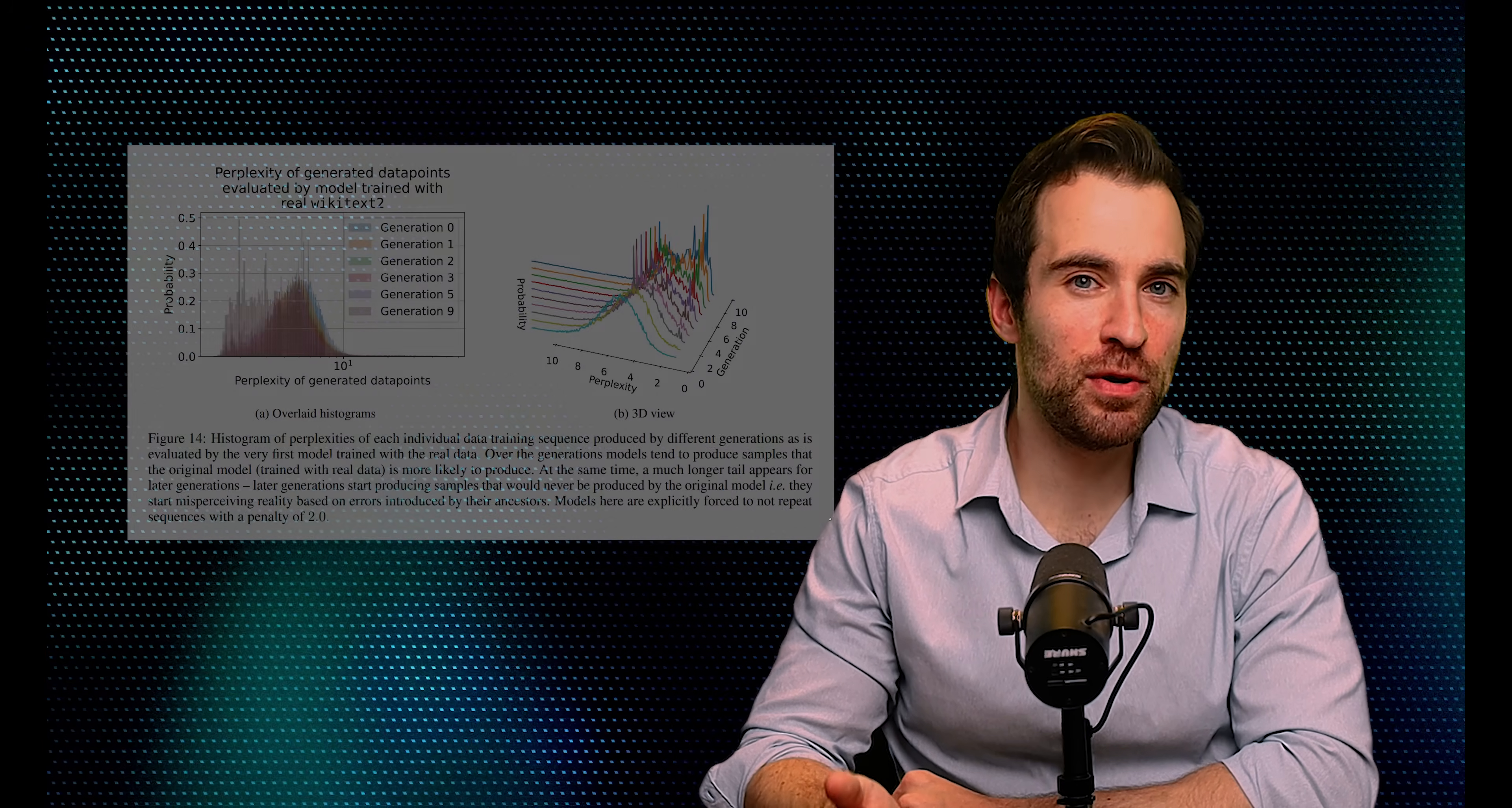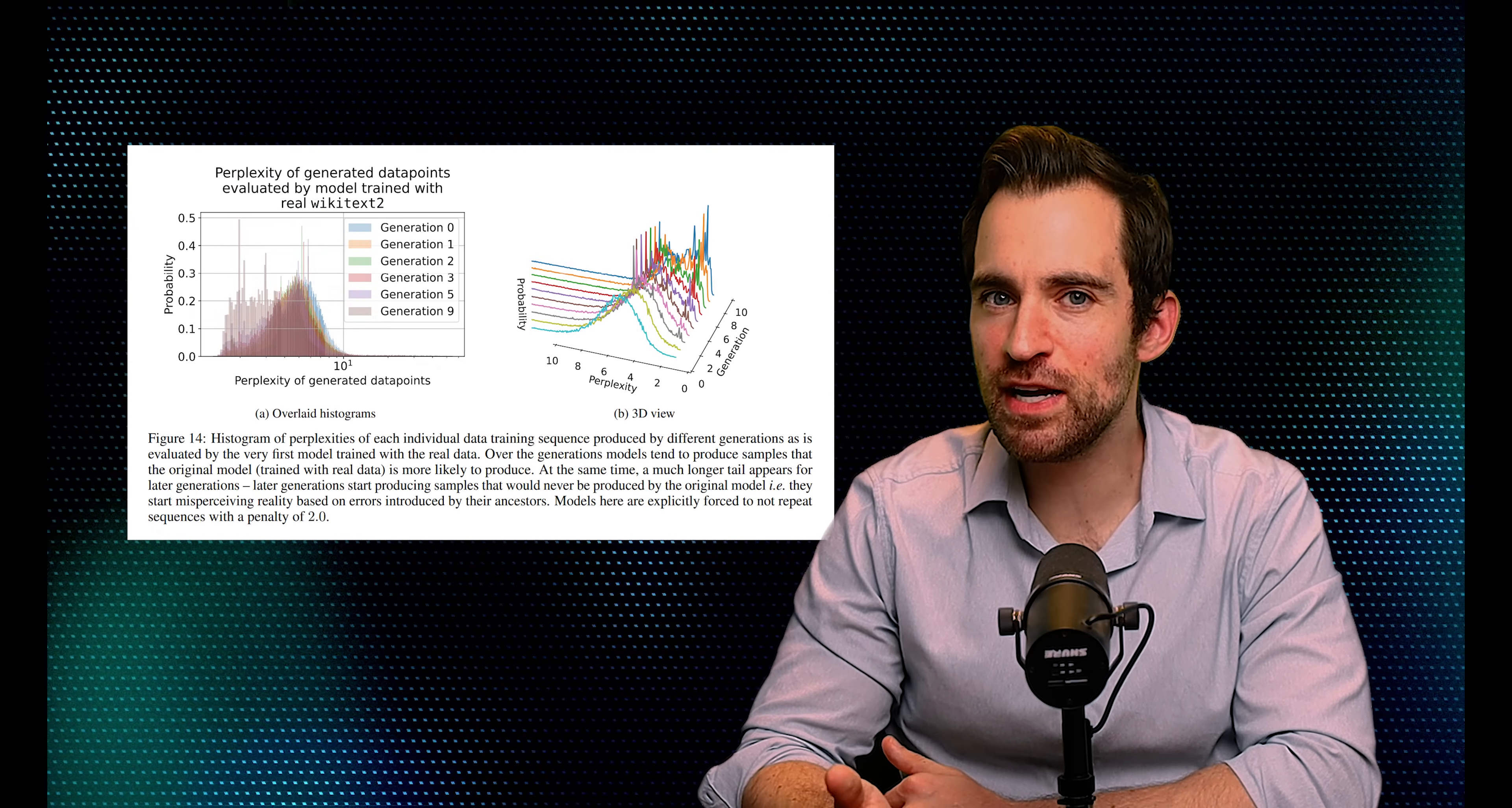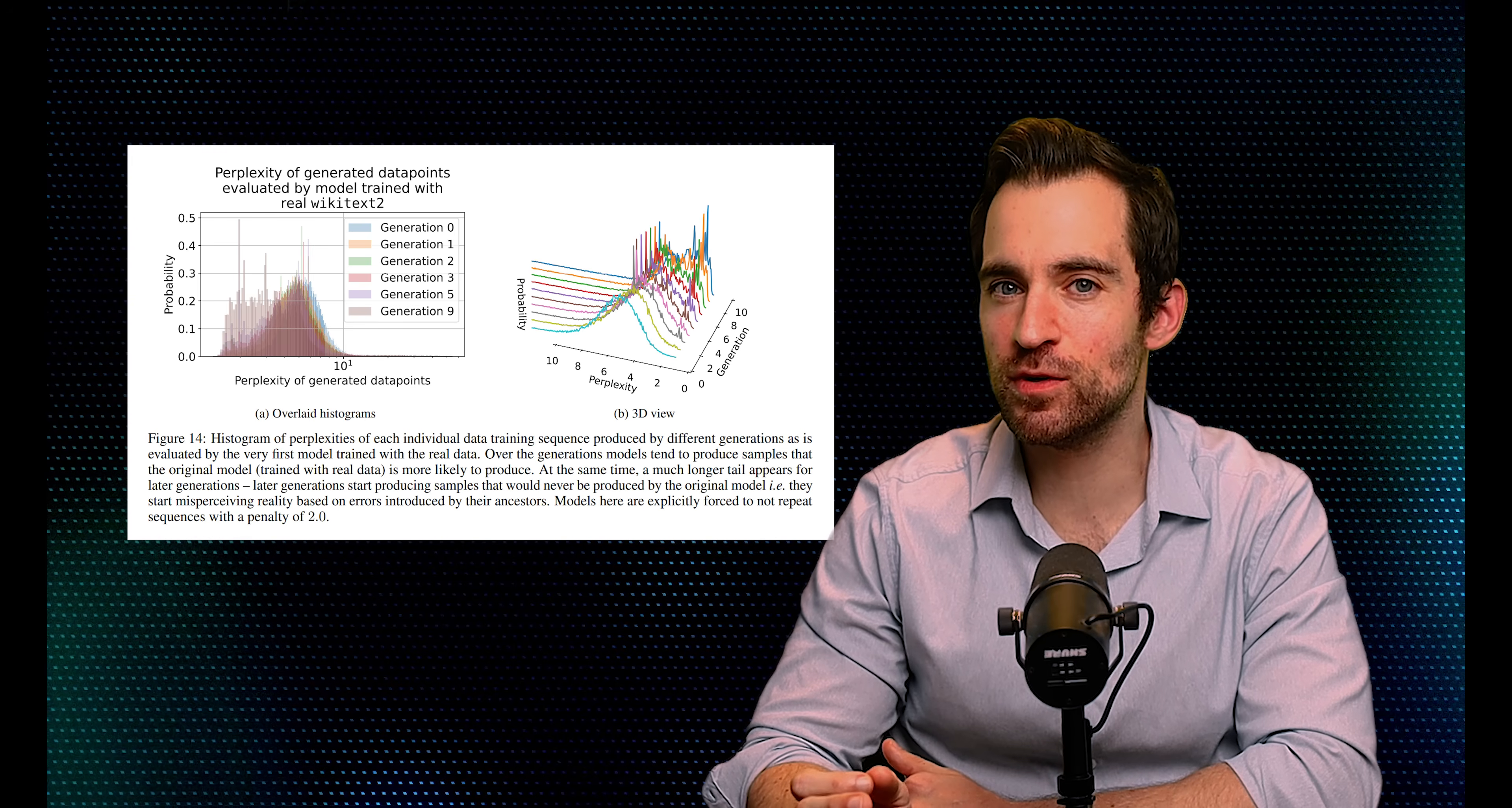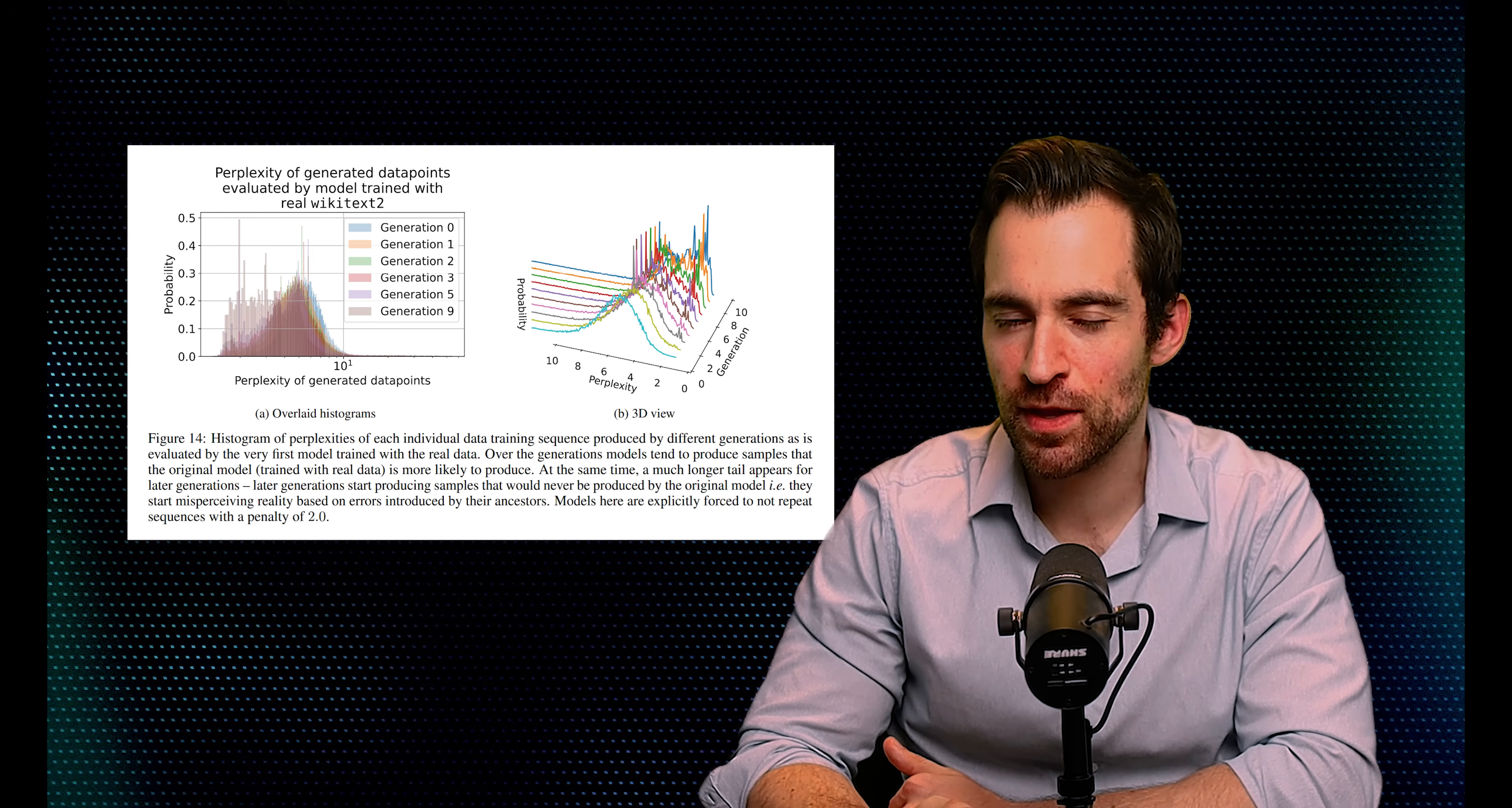And something similar happens with language models. Essentially, they show empirically that models forget the long tail of real data. They lose information about rare but real sequences, and they start generating more high probability sequences.